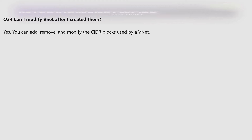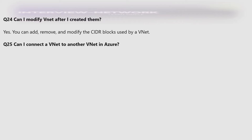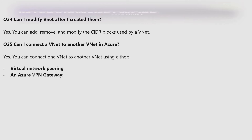Can I modify VNets after I created them? Yes — you can add, remove, and modify the CIDR block used by a VNet. Can I connect a VNet to another VNet in Azure? Yes — you can connect one VNet to another VNet using either virtual network peering or an Azure VPN gateway.